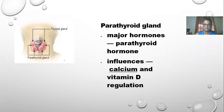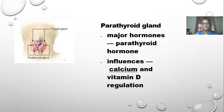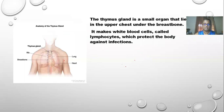The parathyroid gland's major hormone is parathyroid hormone, which influences calcium and vitamin D regulation in the body. It is located at the front of the neck and is important for maintaining calcium control in the bones and blood. When the body becomes acidic, calcium gets absorbed into the bloodstream and the bones start to become brittle because it is not reabsorbed back into the bone.